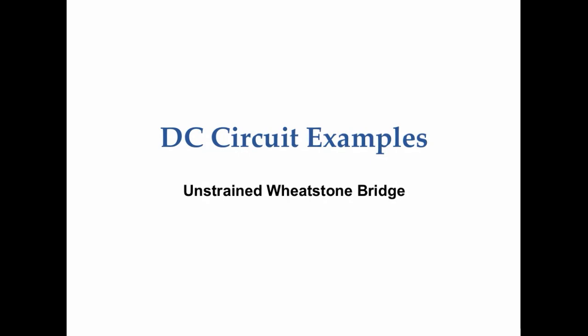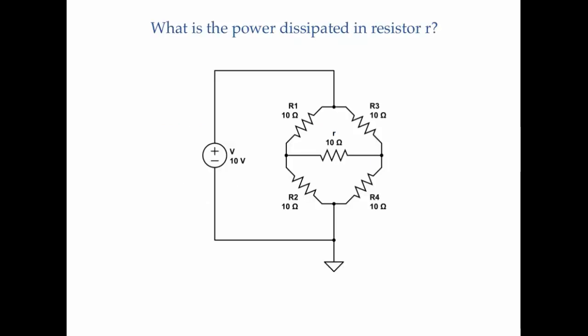In this example, we're going to look at a DC circuit, specifically an unstrained Wheatstone bridge. A Wheatstone bridge is what you see here in the diagram. In this case, I've put five resistors on the bridge, but technically you can put any circuit element you want on each branch and in the middle of the bridge. My question is: what is the power dissipated in resistor little r?